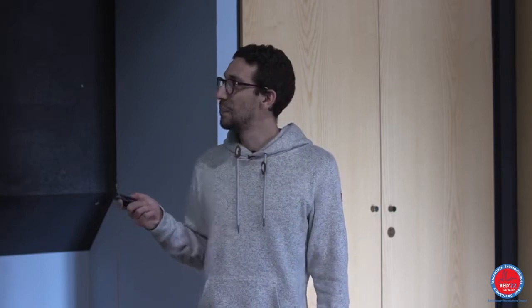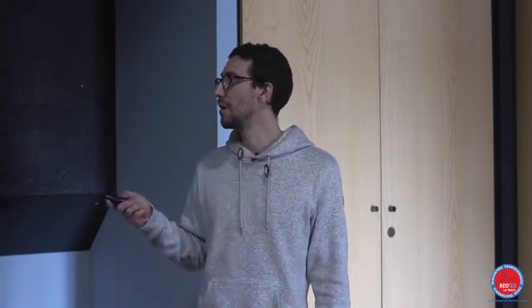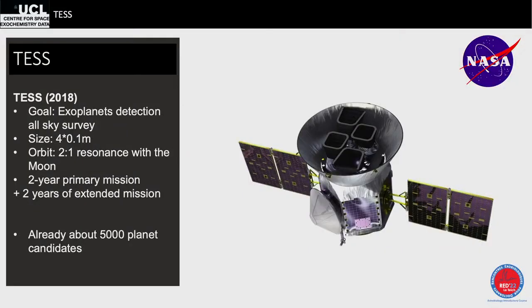In 2018, NASA sent TESS — the Transiting Exoplanet Survey Satellite — with the goal to cover the whole sky and detect exoplanets everywhere, not just one patch. It's composed of four small cameras and is much smaller than Kepler, so it doesn't have the same sensitivity, but it observes the whole sky. There was a two-year primary mission, extended for two more years due to success. We now have around 5,000 planetary candidates.